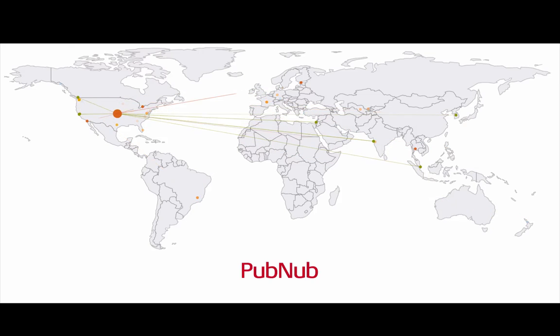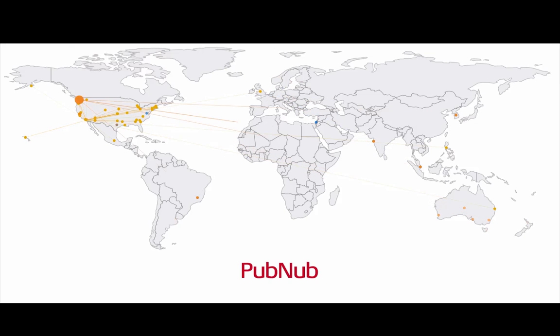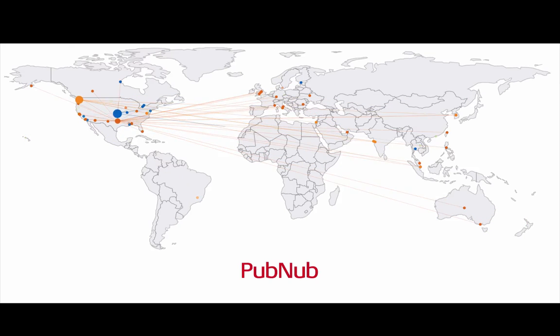In latencies usually under 50 milliseconds, end users receive data published through PubNub's cloud-hosted real-time messaging service. And virtually instantly, this information is now also visible in our new real-time map.